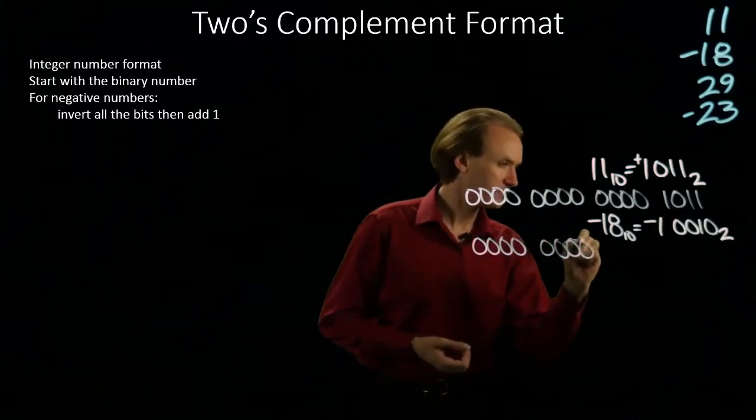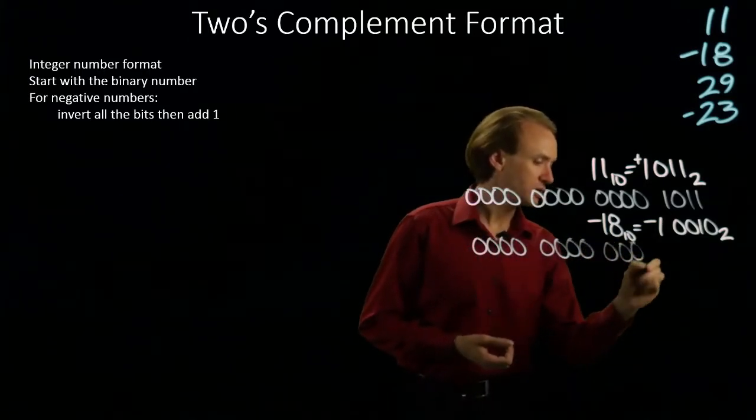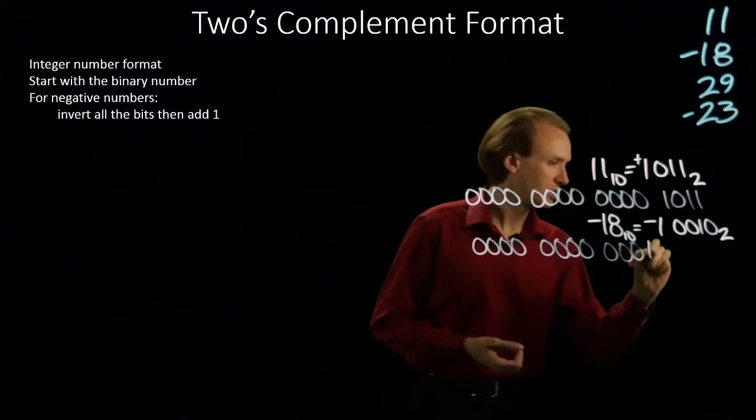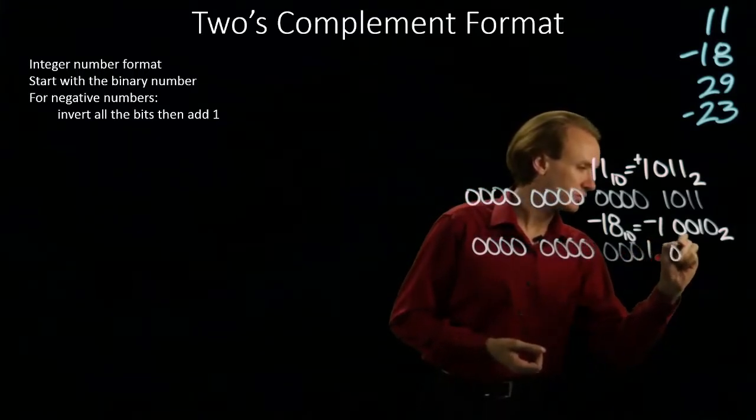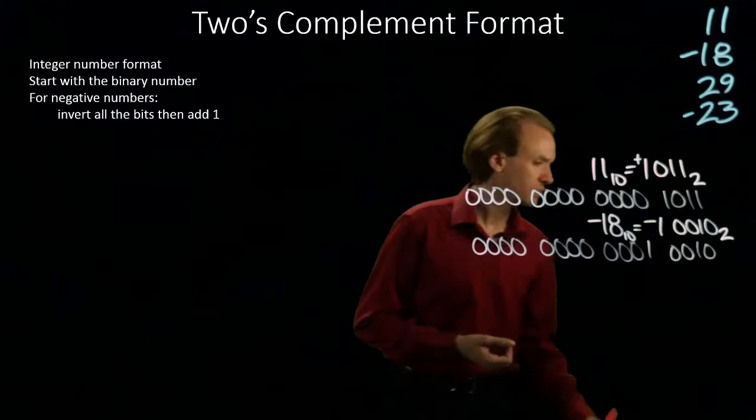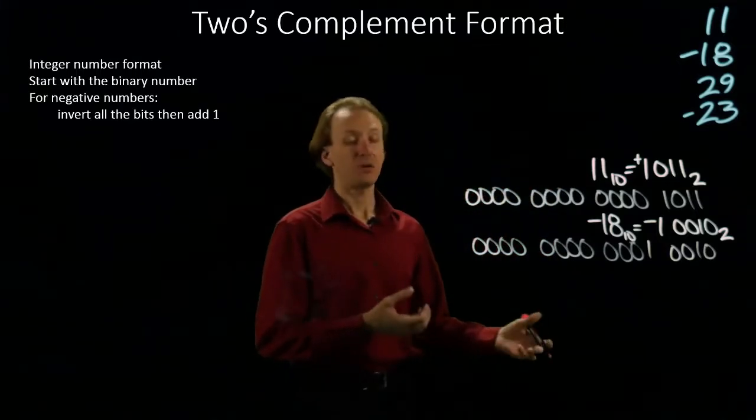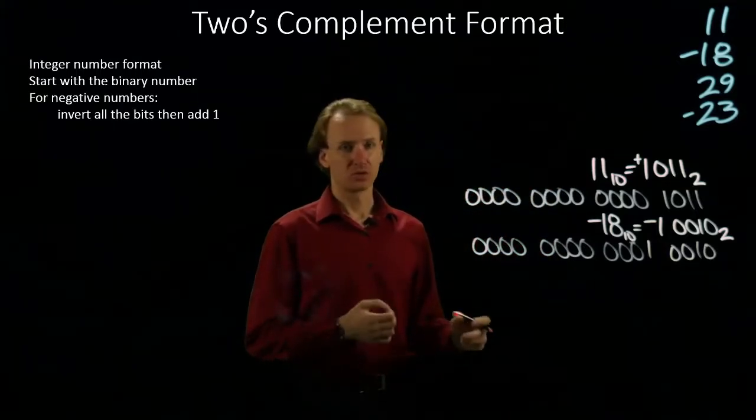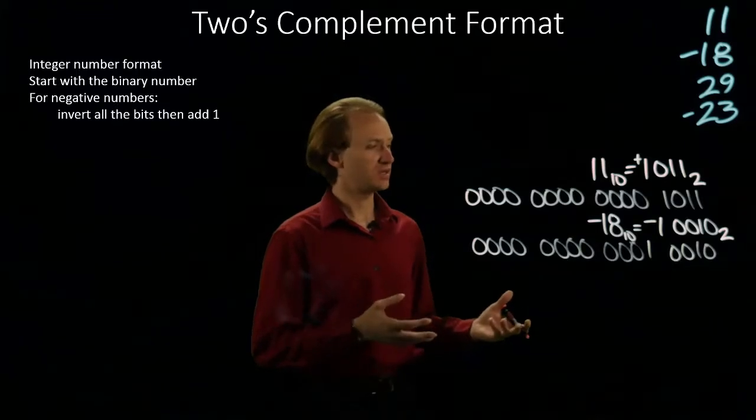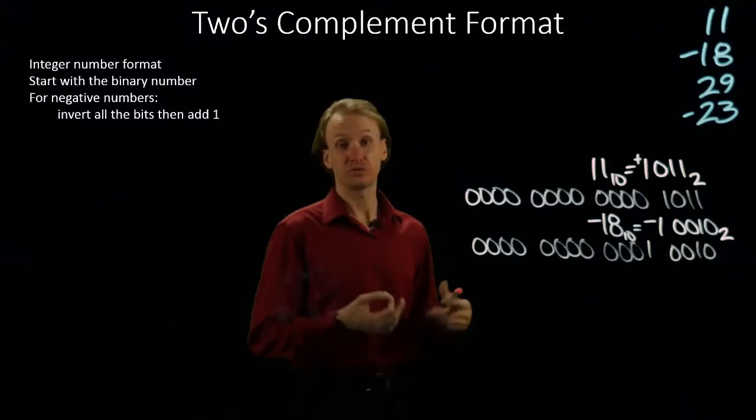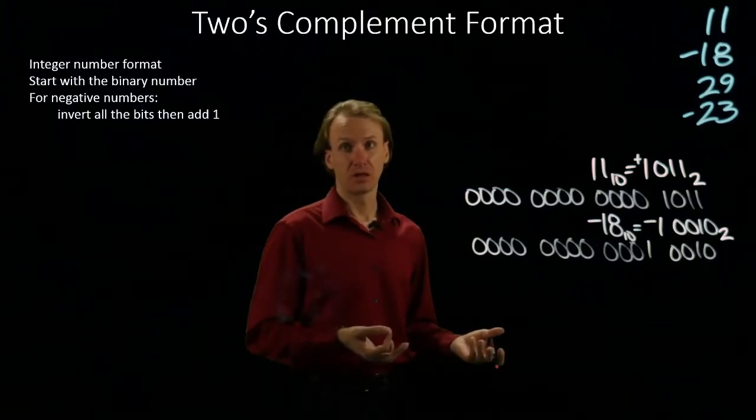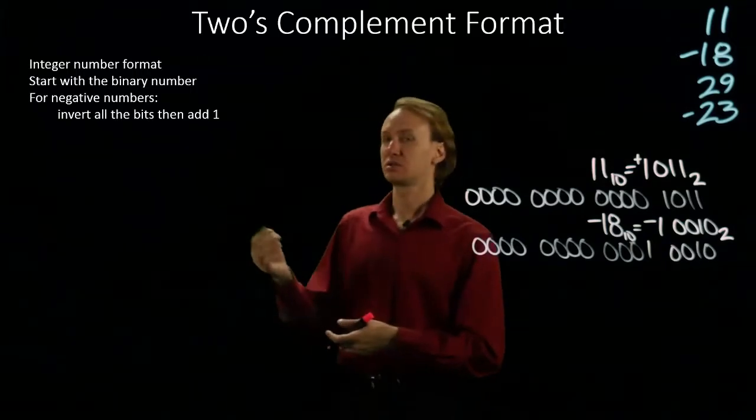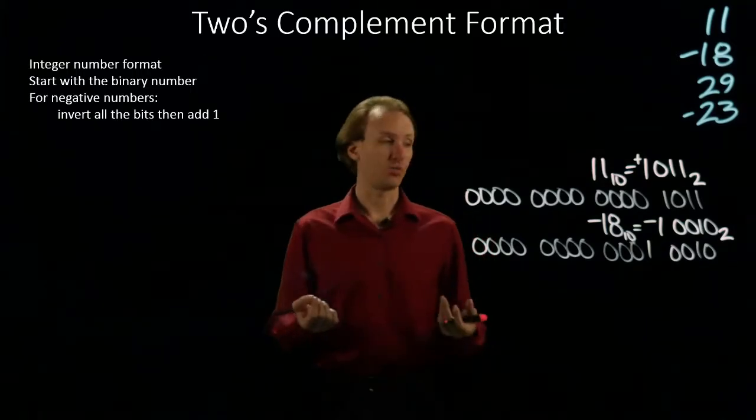I'll have 15 leading zeros this time, followed by my actual number, but this time I want a negative number. So I'm going to take positive 18 and apply the two's complement operation to it. Two's complement operation says invert all the bits, then add 1.